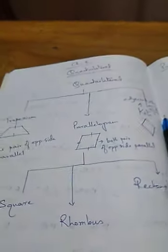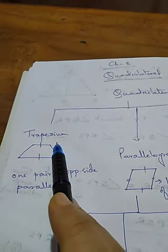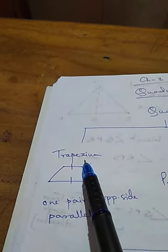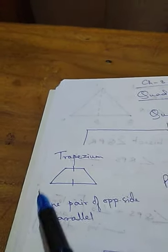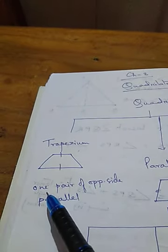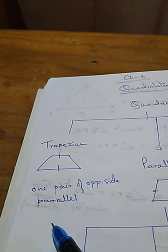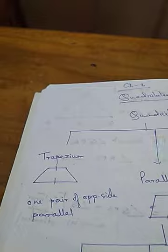There are three main types of quadrilaterals. One is called trapezium, one is called parallelogram, and another is called kite. Now, what is called a trapezium? Here you see four sides are there, but the speciality is what? One pair of opposite sides is parallel.